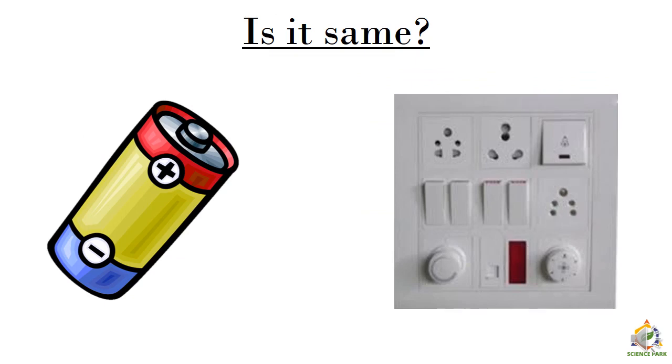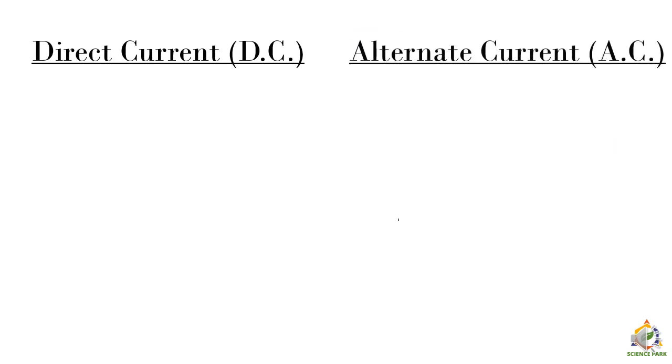The current we get from electric cell and the one we get from our power points in our home, is it the same? Well, they are not same. The one which we get from electric cell is called as direct current, and the one which we get from our power points is called as alternating current. Now what is direct current and alternating current?